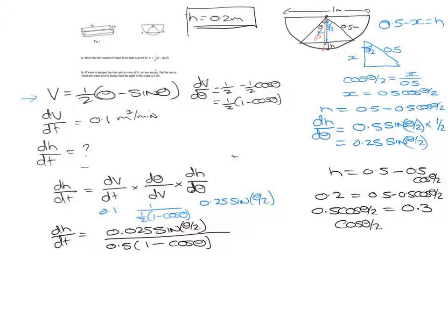Now cos theta over 2 is 0.3 divided by 0.5, which is 0.6. And now we can inverse cos to find theta over 2.